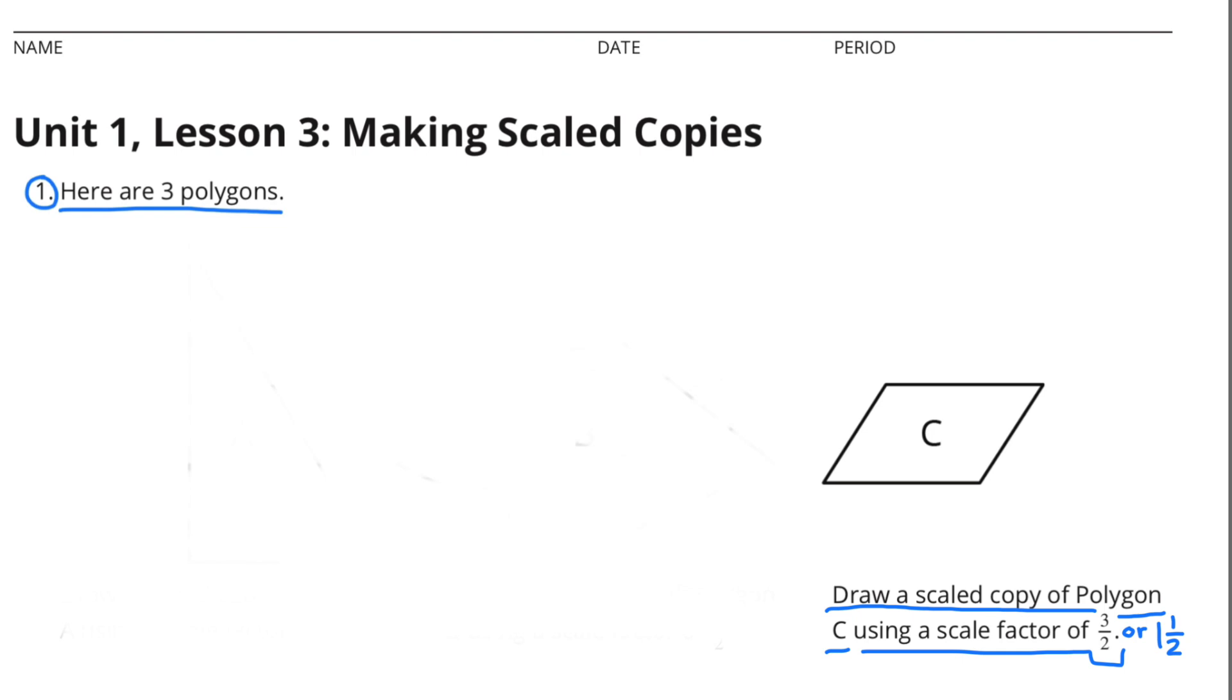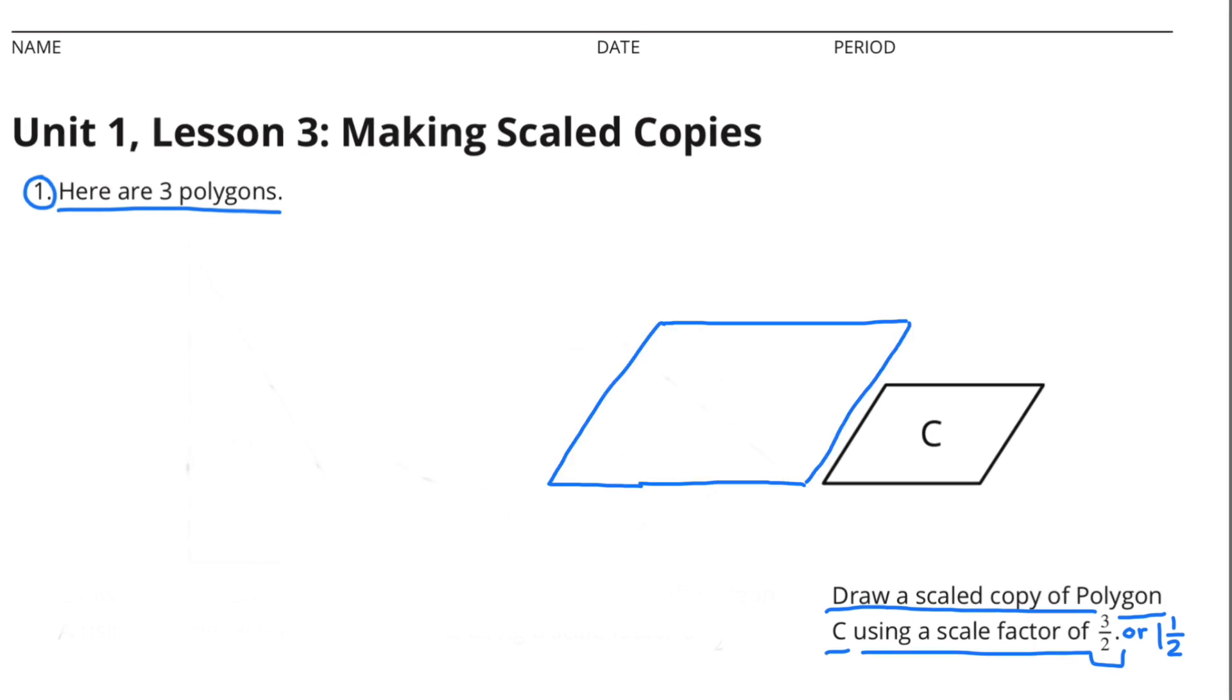Draw a scaled copy of polygon C using a scale factor of 3 halves or 1 and a half. This scaled copy has 1 and a half times the width and 1 and a half times the height.